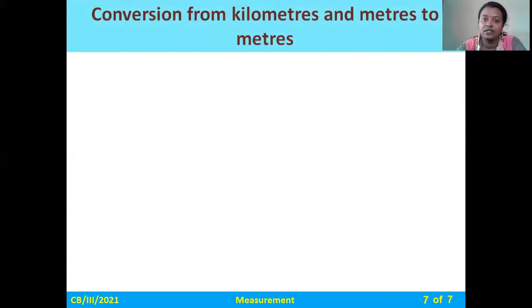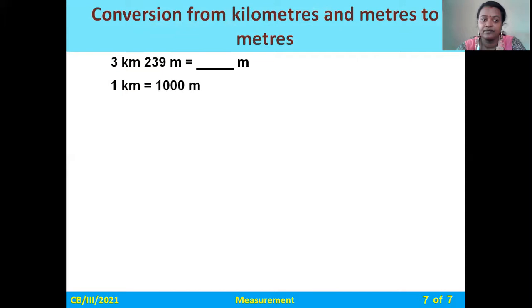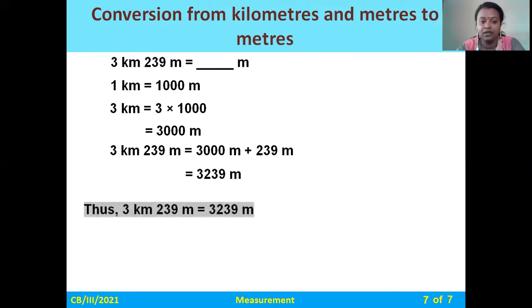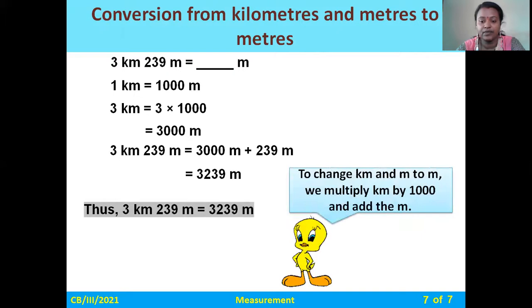Similarly, if we have to convert kilometers and meters to meters — for example, 3 kilometers 239 meters. We convert 3 kilometers to meters by multiplying by 1000, giving 3000. Then we add the remaining 239 meters: 3000 plus 239 equals 3,239 meters. So to change kilometers and meters to meters, multiply the kilometers by 1000 and then add the meters.